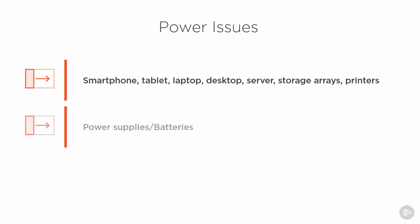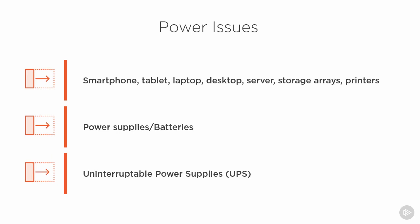It could be related to a problem with an actual power supply that plugs into an electrical outlet in the wall, or it could be a problem that stems from a battery — maybe a battery that no longer fully charges, or maybe the battery's fine but it's just not being charged properly, perhaps due to a bad USB cable. We also have to consider uninterruptible power supplies or UPS devices, which can temporarily provide power when we have a power grid outage.